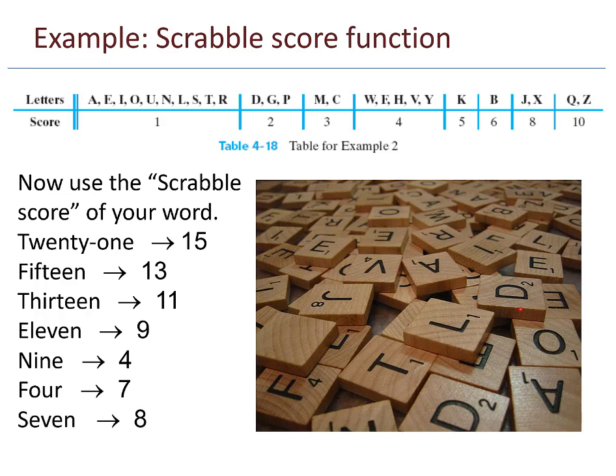For example, if you start with the number 21 and you use the table on top to figure out your Scrabble score, you get 15. Then 15 gives you 13 points, 13 gives you 11 points, 11 turns into 9, 9 turns into 4. Now this isn't the same function as before, so I don't get 4 again, but the score for 4 would be 7. 7 turns into 8. 8 gives you a score of 9. So we end up with a sequence of 4 different numbers that keeps repeating forever.